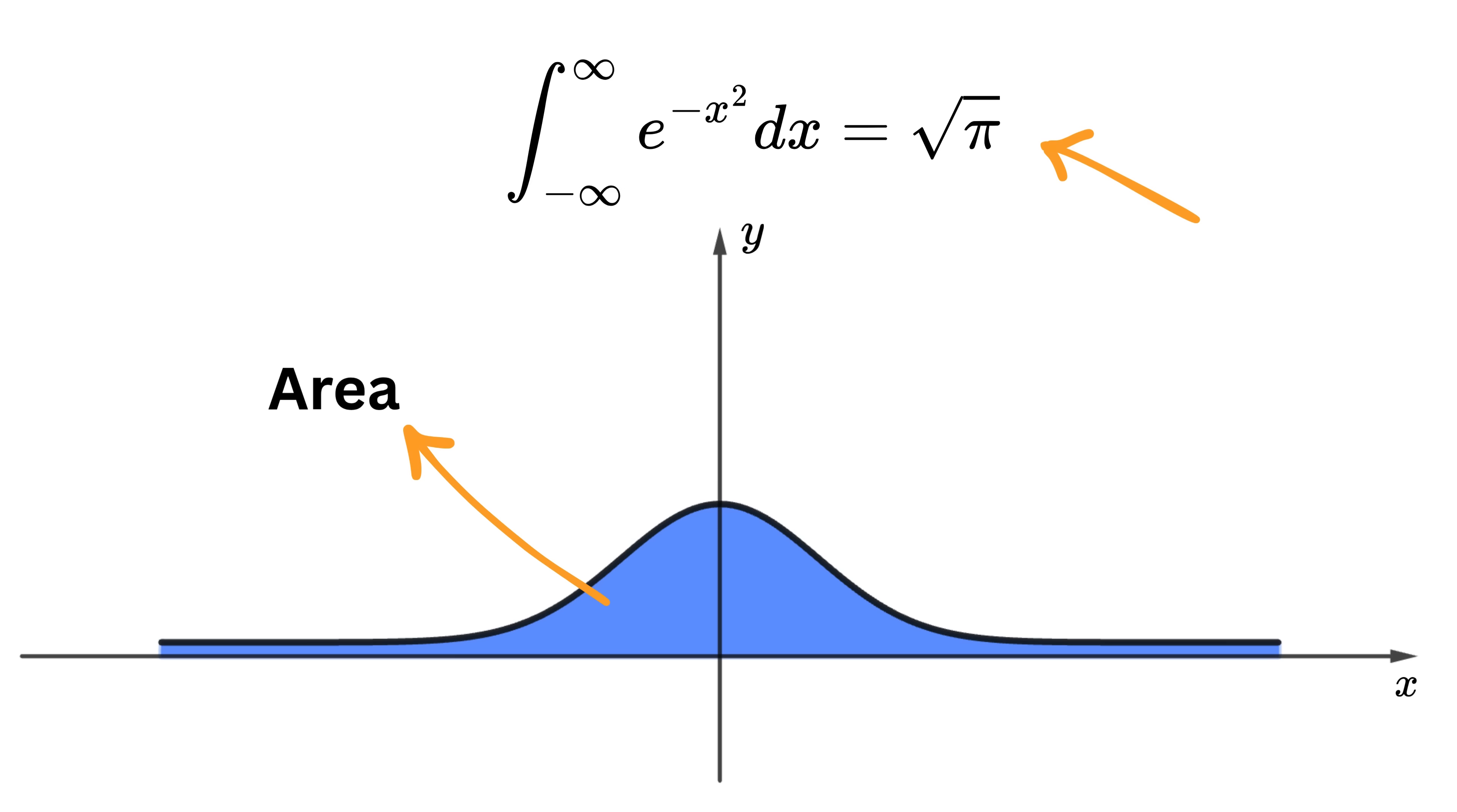Where did that come from? There are no circles here, no diameters or radii. It's just a weird exponential curve. So seriously, what is pi even doing here?